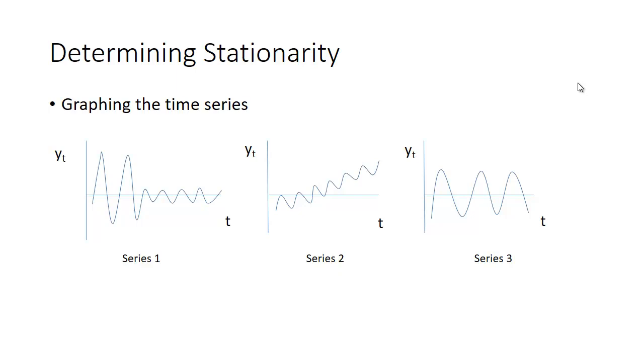How about Series 2? Series 2 seems to have constant variance. The fluctuations seem to be constant over time, but it seems to be trending upward, which indicates that you're not going to have a constant mean.